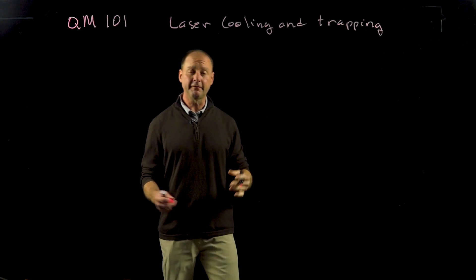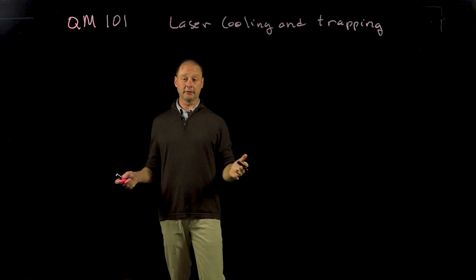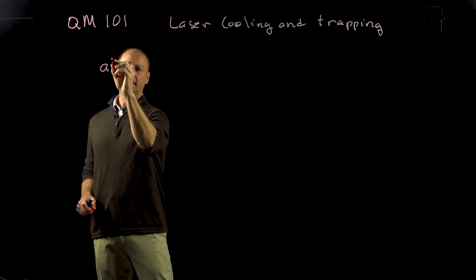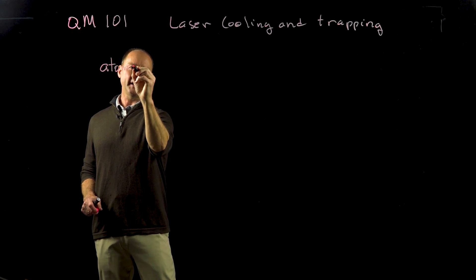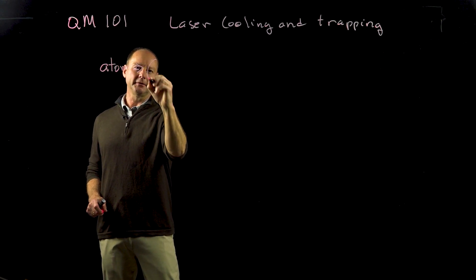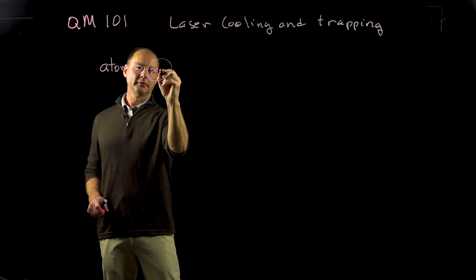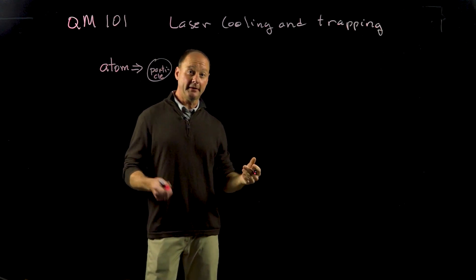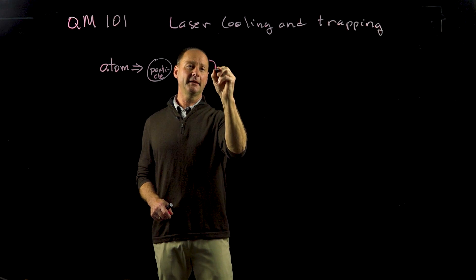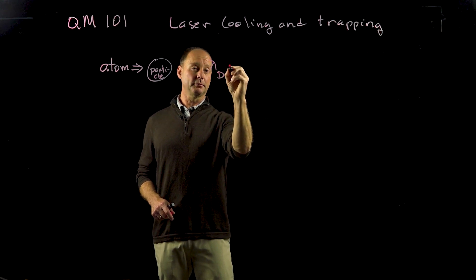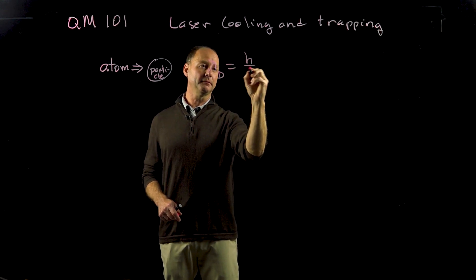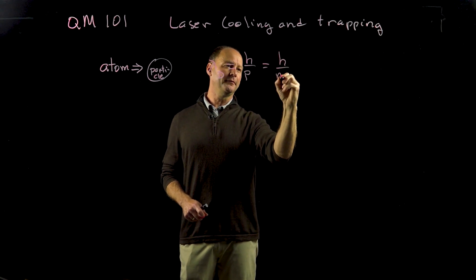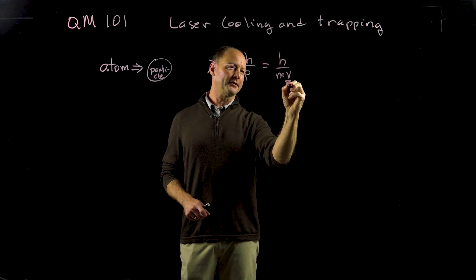The big idea follows from what we did in Quantum 101. I want to take an atom — an atom normally looks like a particle — and we want it to behave like a wave. To get it to behave like a wave, its de Broglie wavelength equals h over p, which is h over mv, where v is the velocity.